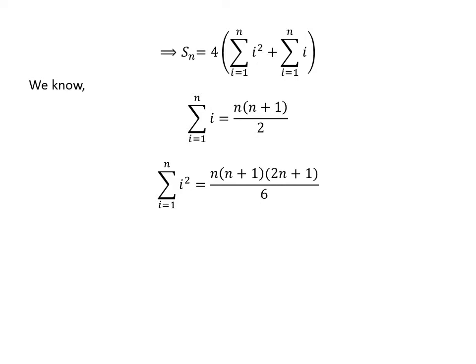We know the sum of the first n natural numbers is equal to n times (n plus 1) divided by 2. The video explaining this derivation is appearing in the upper right corner, and the link has been mentioned in the description section.